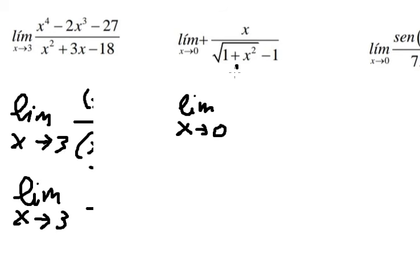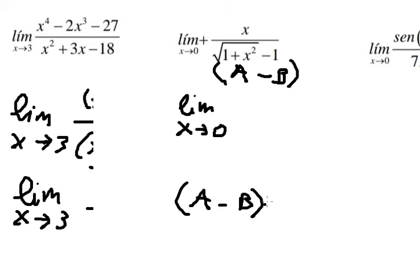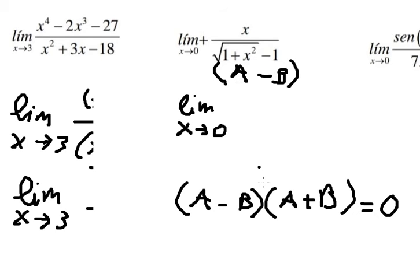For the second question, we have the form a minus b, so we apply the conjugate formula: (a minus b) multiplied by (a plus b). We multiply both the numerator and denominator by the conjugate, which is the square root of (1 plus x squared) plus 1.